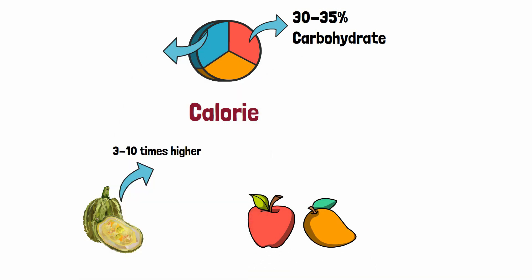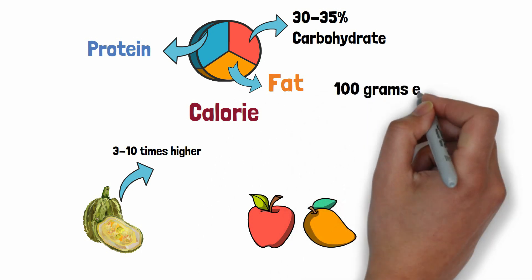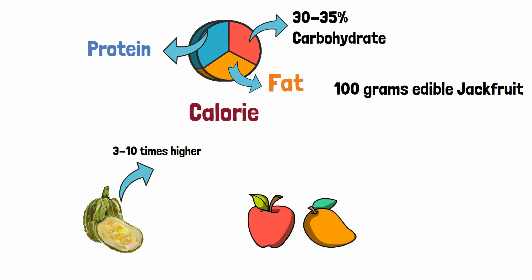So a mentionable portion of calories is also supplied by proteins. It should be mentioned that fats present in jackfruit also provide some of the calories. It has been found that for every 100 grams of edible jackfruit, we get around 93 to 95 calories.